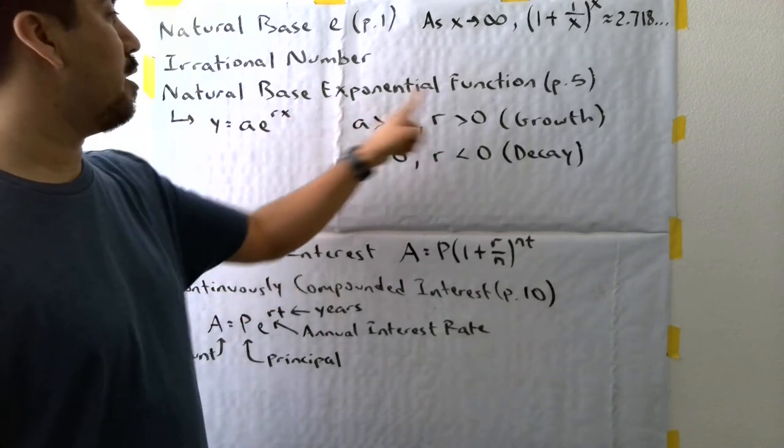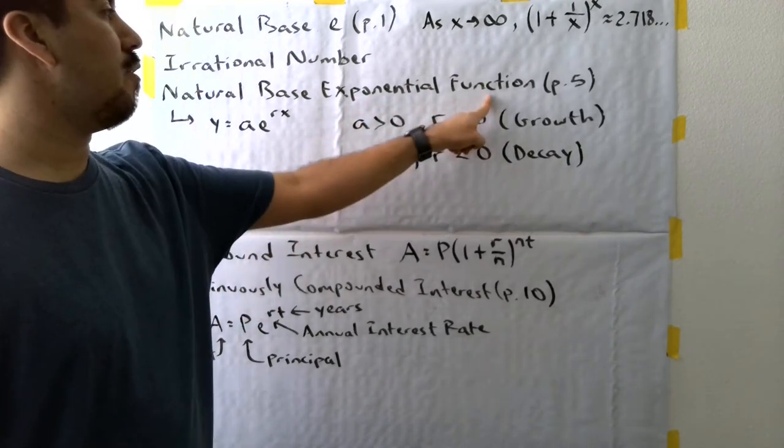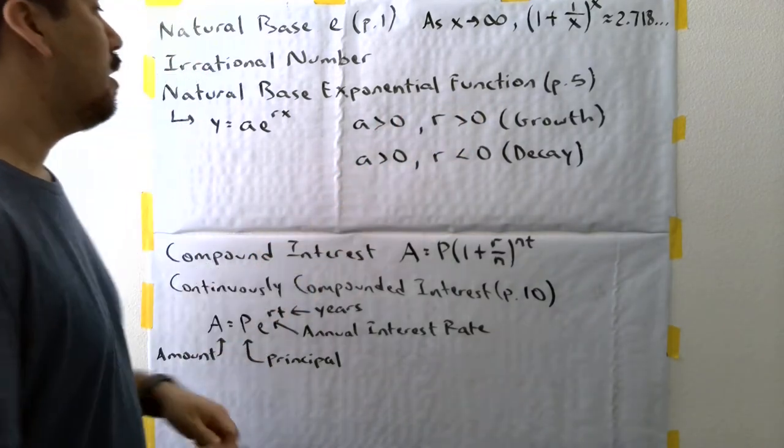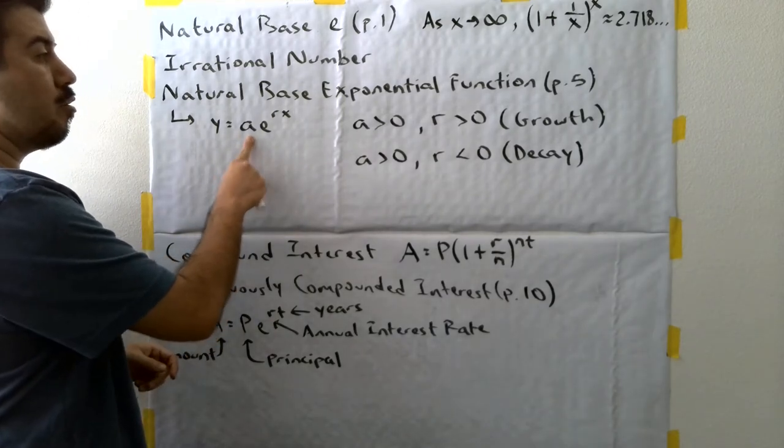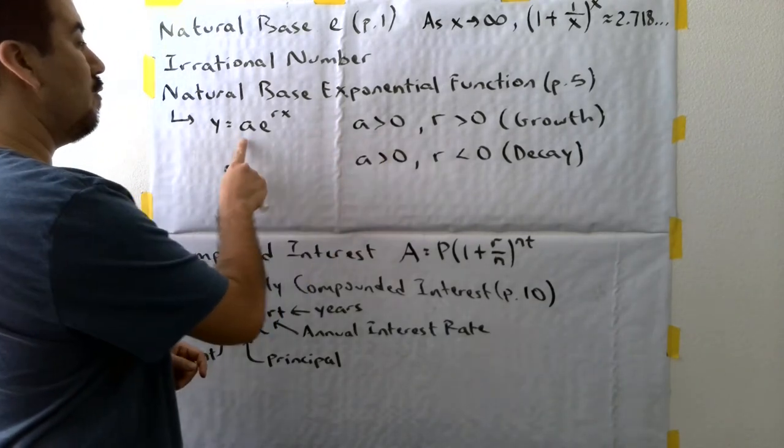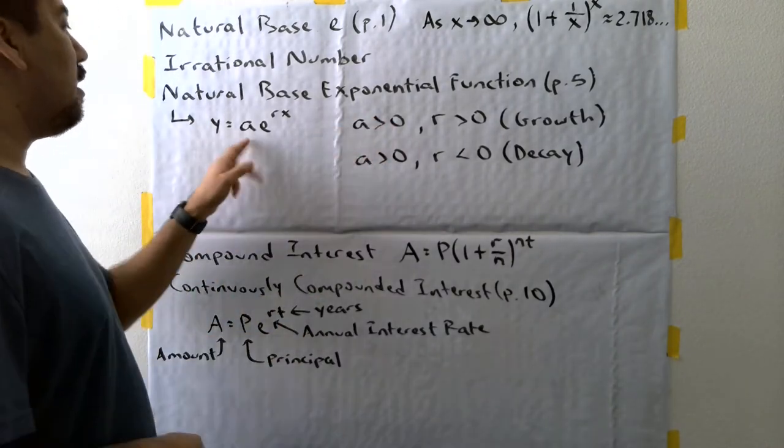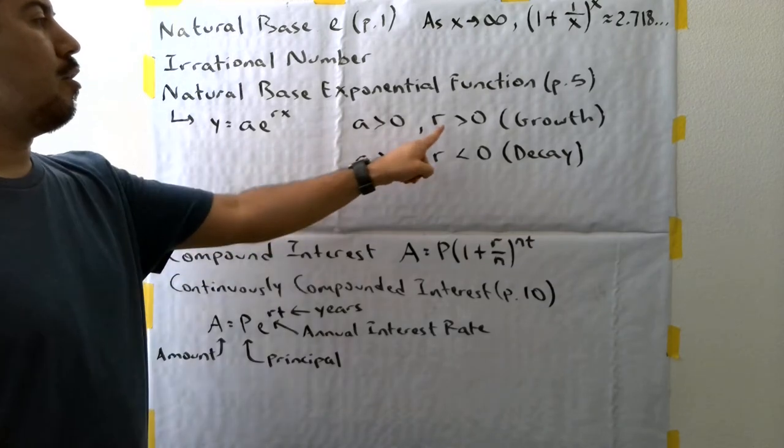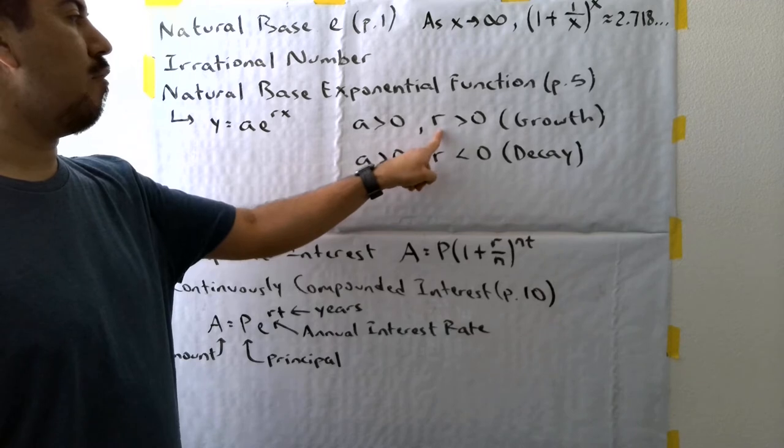There is a natural base exponential growth function and a natural base exponential decay function. And these are the ways that we can tell which one is which. The A value in front is just some value, and it's typically going to be a value greater than zero. So even a fraction, one over two, 0.5, that's greater than zero. Any value that is greater than zero will go here.